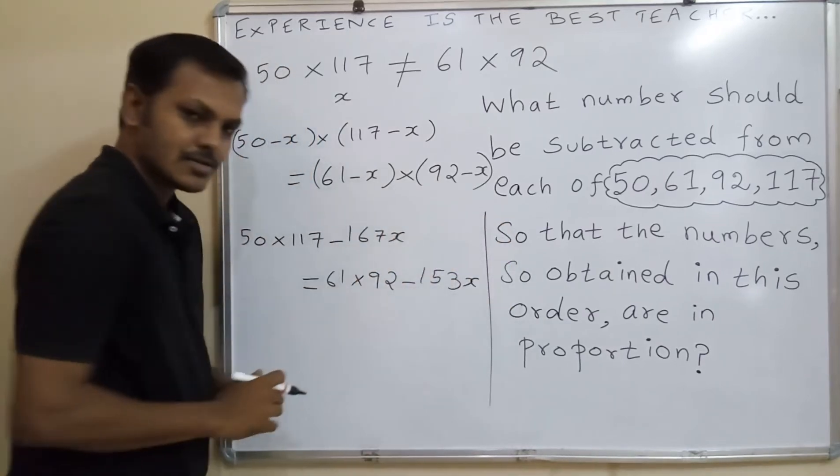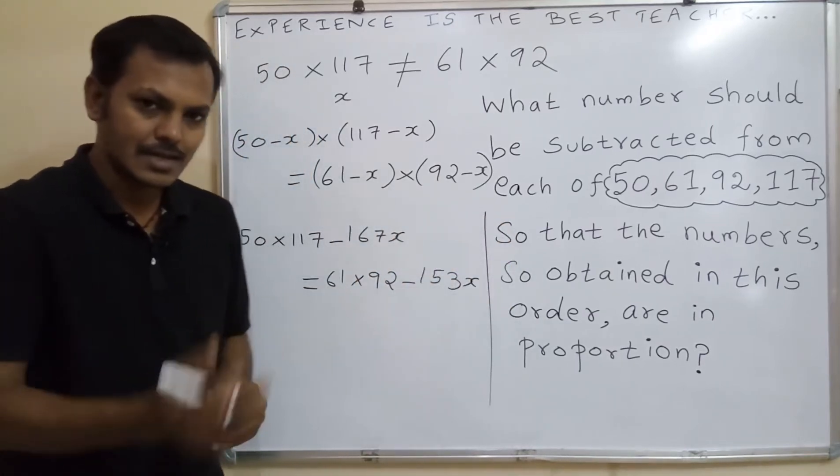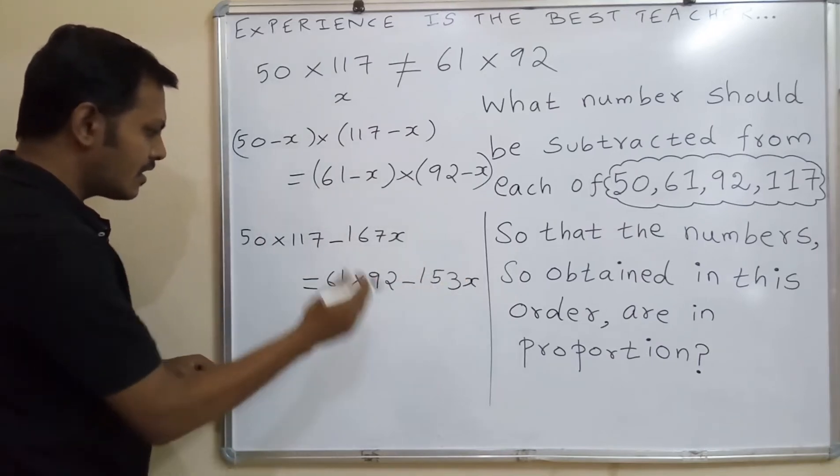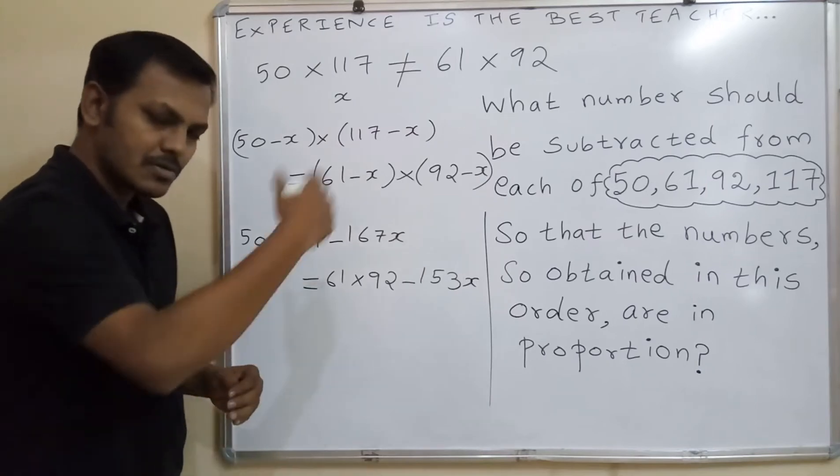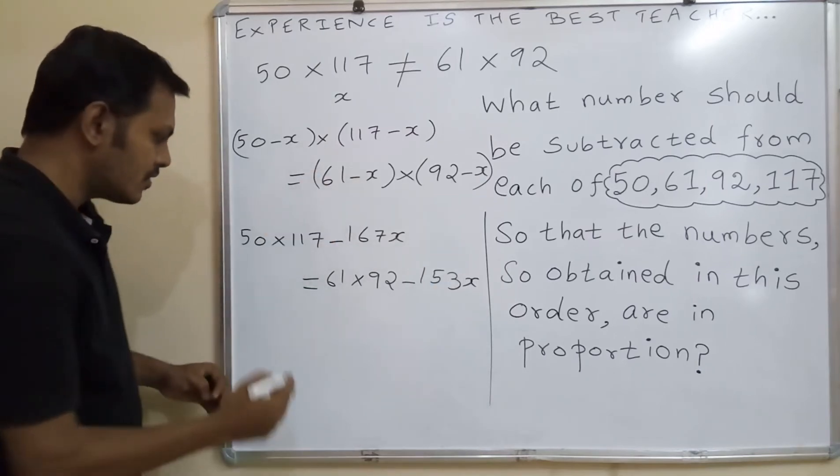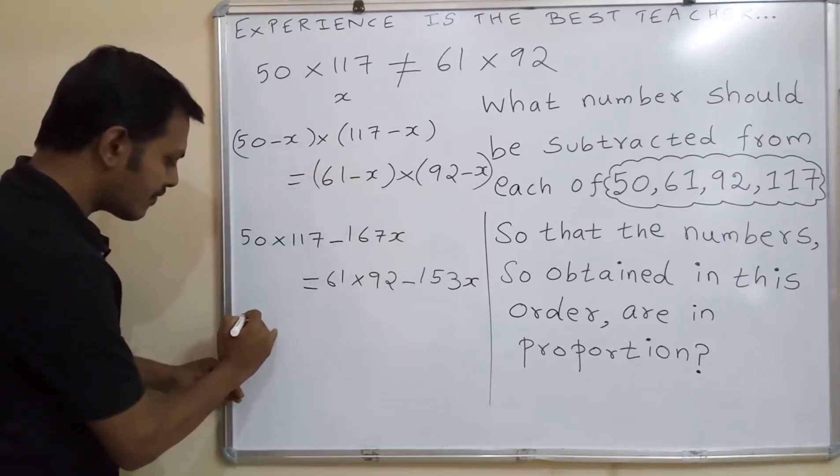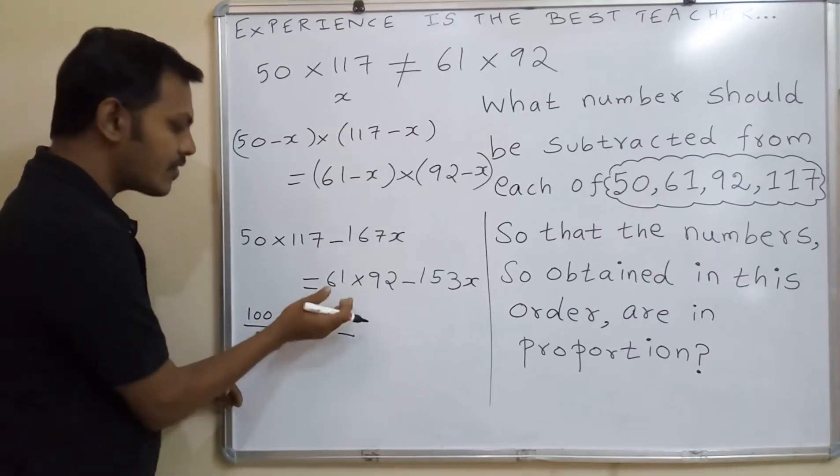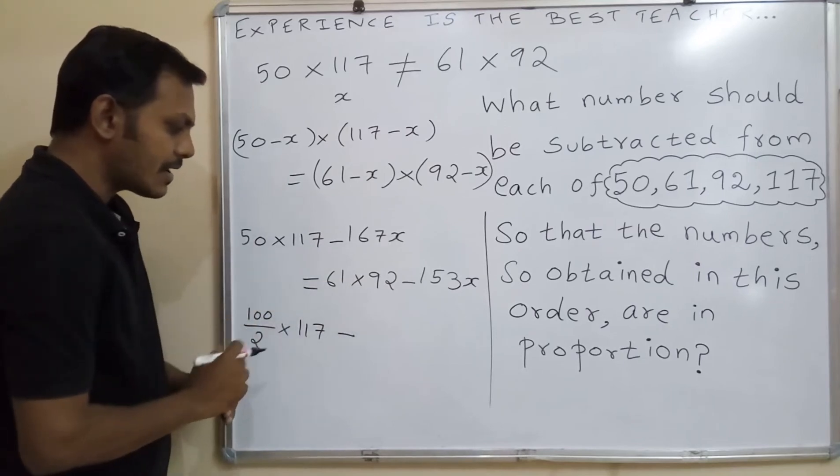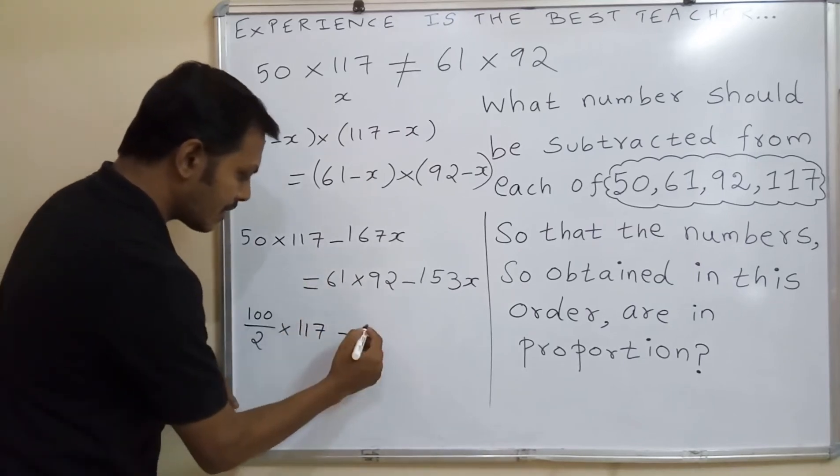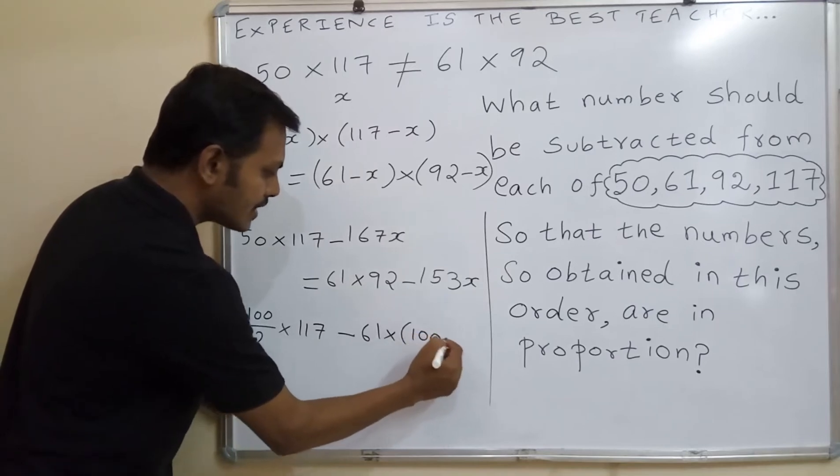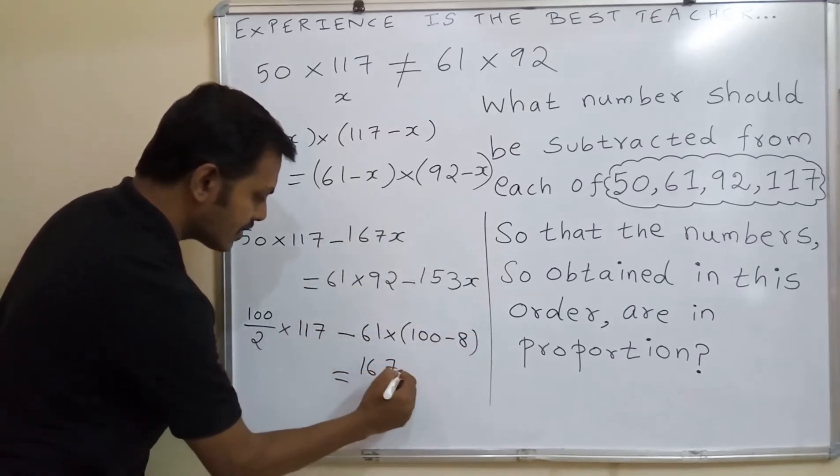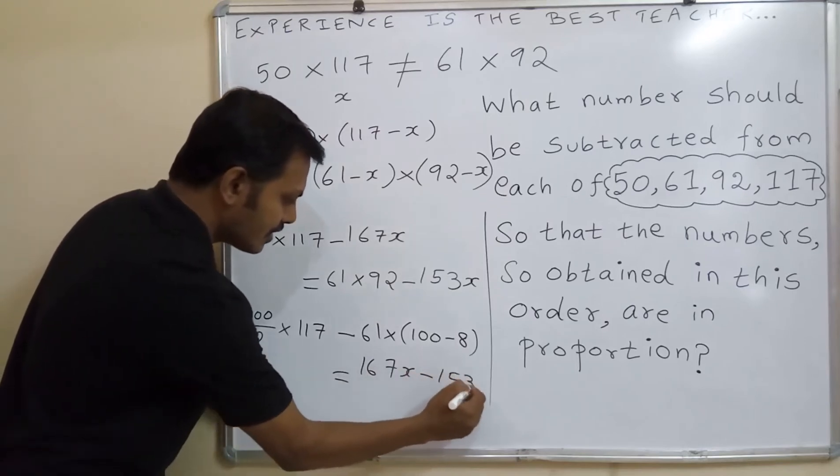Now just bring this 61 into 92 to this side. Then minus 167 is transferred to that side, it will become positive. See 50, we can, for our convenience, we can write 100 by 2 into 117. When you are transposing this 61 into 92, it will become negative, plus will become minus 61 into 100 minus 8.